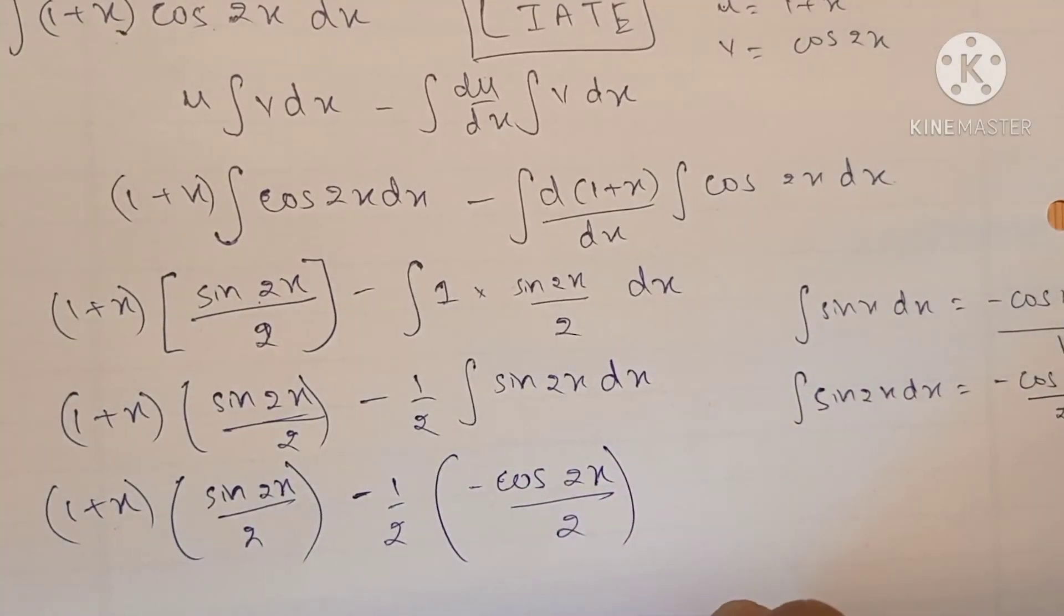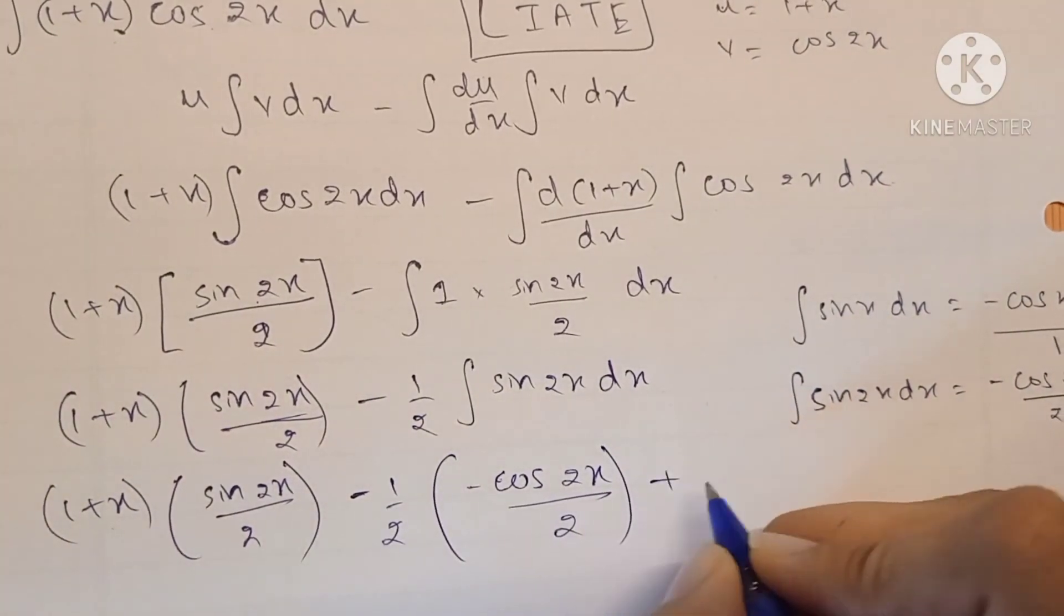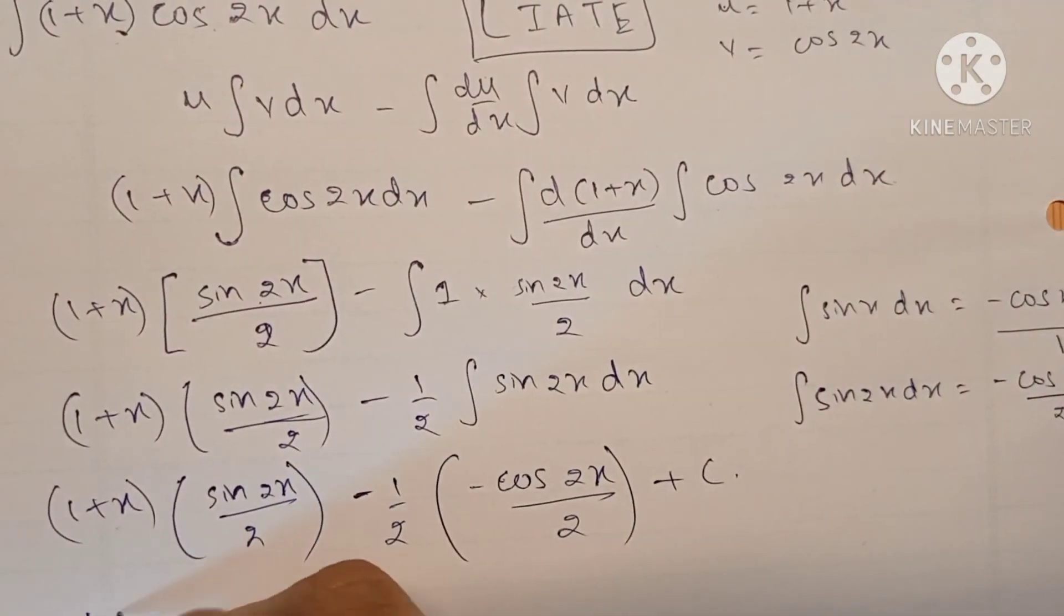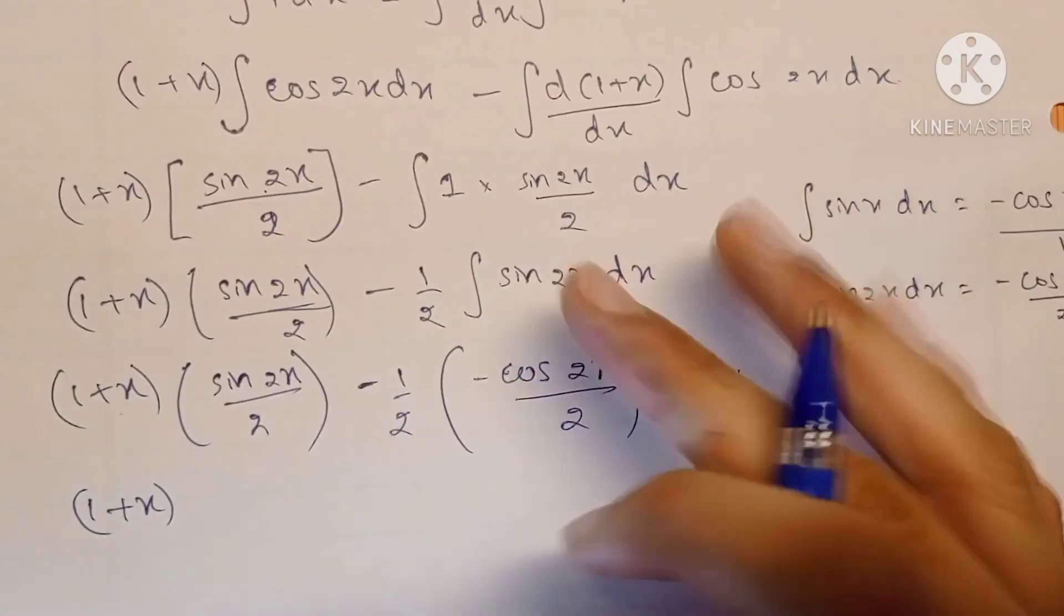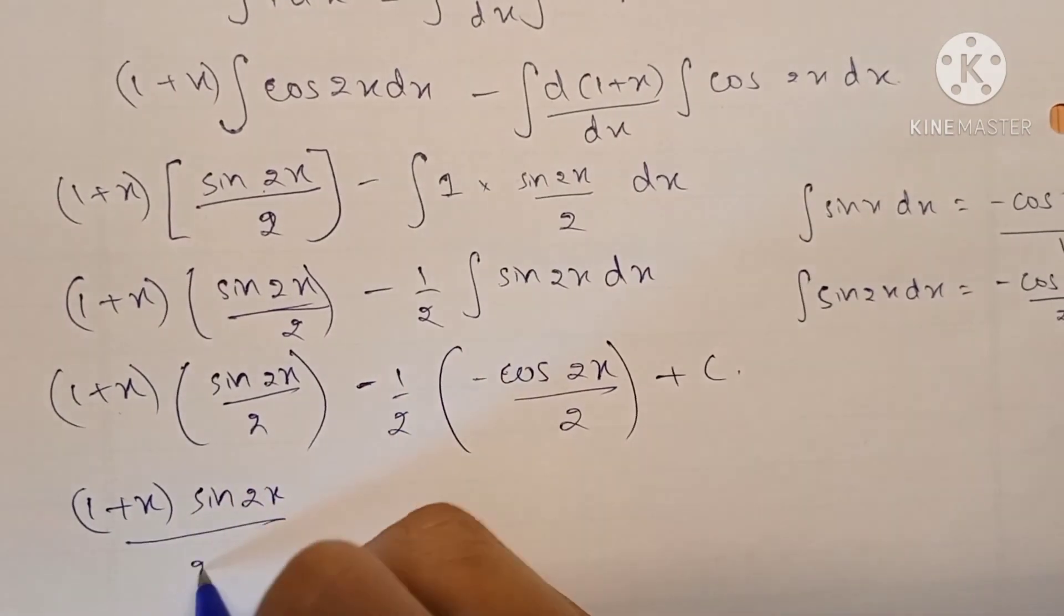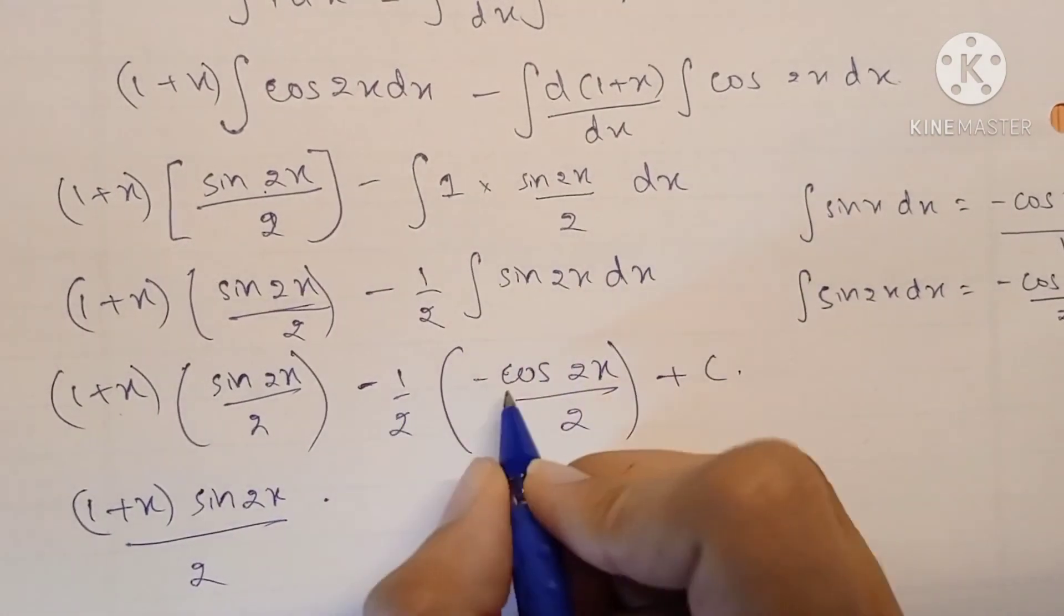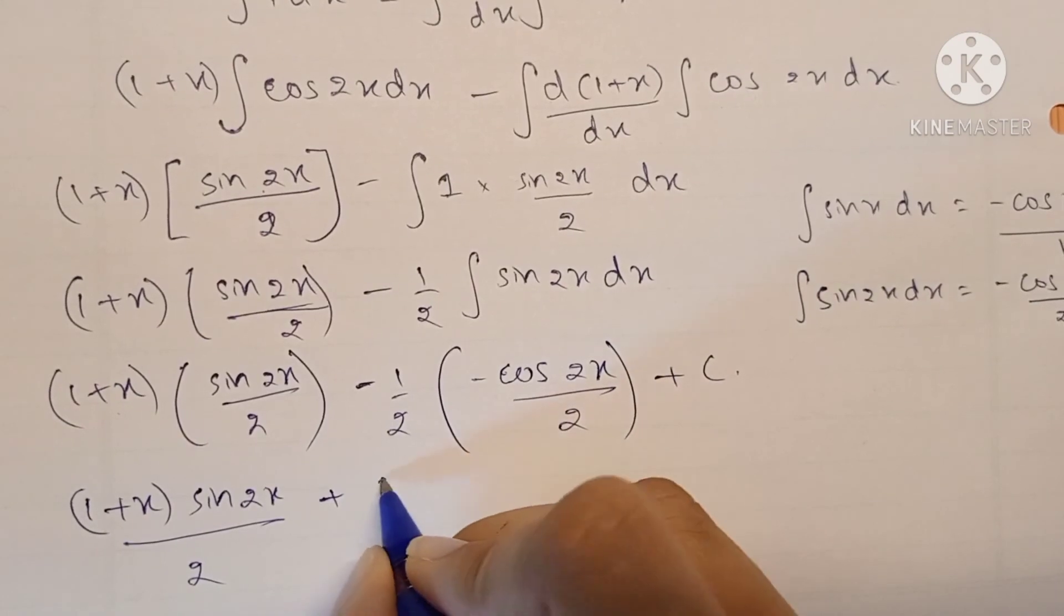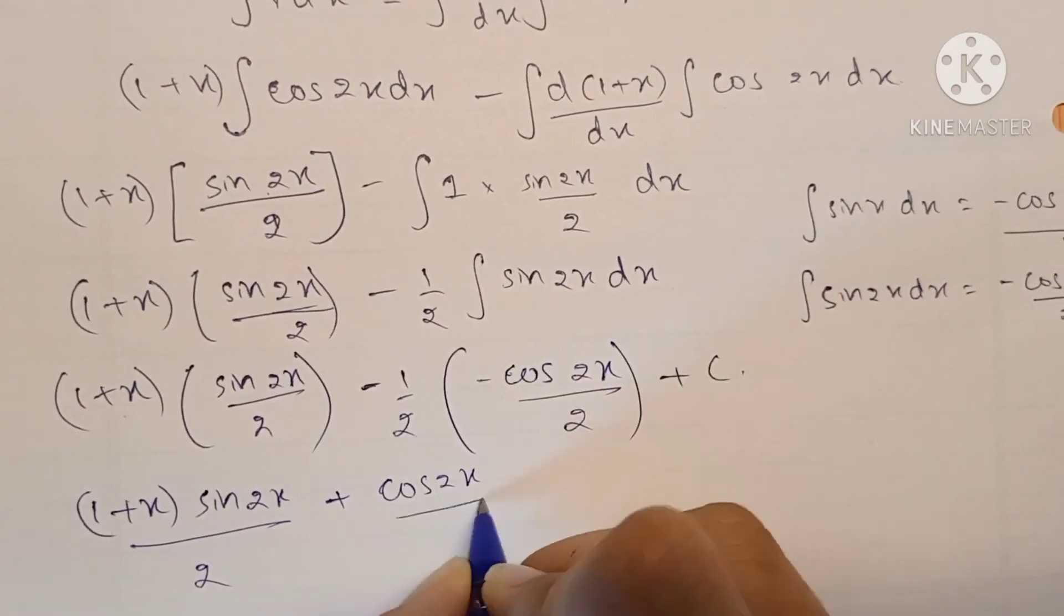The final answer becomes (1+x)sin(2x) over 2, minus minus becomes plus, so plus cos(2x) upon 4 plus C. And that's the final answer.